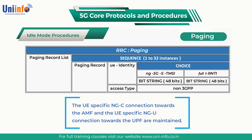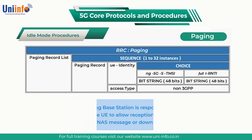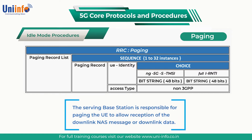In the case of RRC inactive, the UE-specific NGC connection towards the AMF and the UE-specific NGU connection towards the UPF are maintained. This means that the AMF can continue to forward NAS messages towards the serving base station, and the UPF can continue to forward downlink data towards the serving base station. The serving base station is responsible for paging the UE to allow reception of the downlinked NAS message or downlink data.